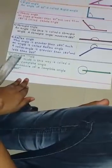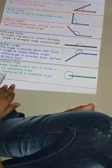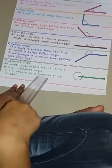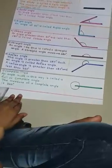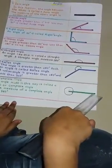7. Complete angle. An angle made in this way is called a full or complete angle. The measure of a complete angle is 360 degrees. This is a complete angle.